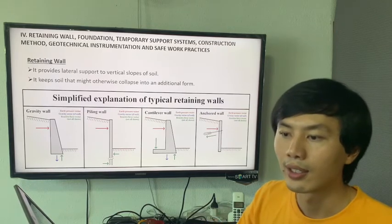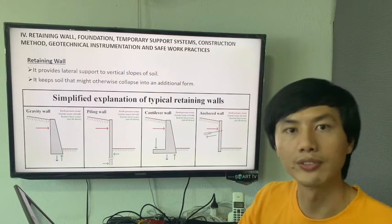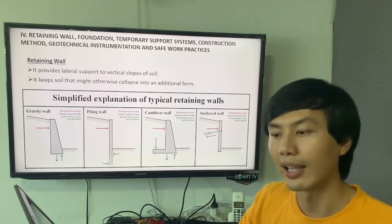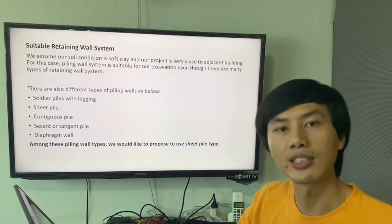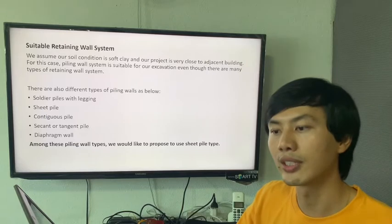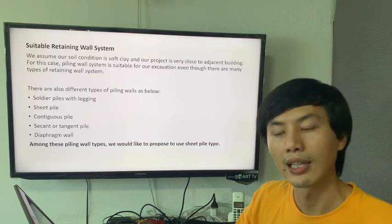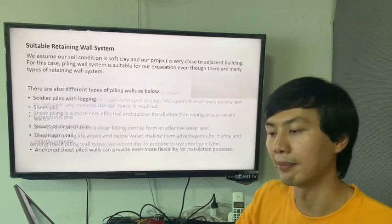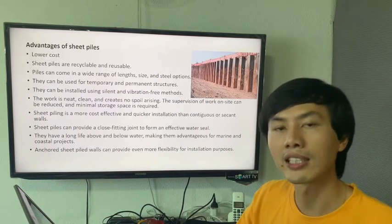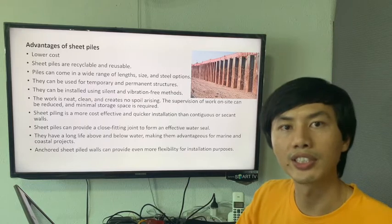First, retaining wall — it provides lateral support to a vertical slope of soil. There are many kinds of retaining walls. For the suitable retaining wall system, while choosing among the many options, we chose the sheet pile type system. The advantages of sheet piles include lower cost and short installation duration.